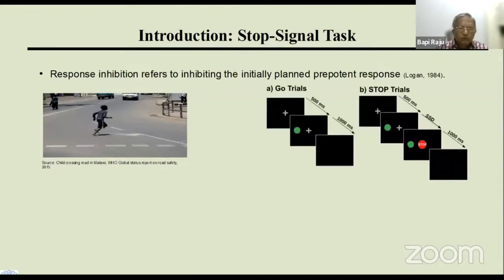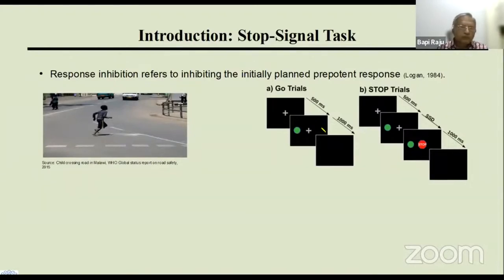In the lab, response inhibition is studied using the stop-signal task. About 70% of trials are 'go' trials and 30% are 'stop' trials. On go trials, the participant makes a quick button press — for example, pressing the left arrow key if a dot appears on the left side. On stop trials, after the go signal, a stop signal instructs the participant to withhold their response.